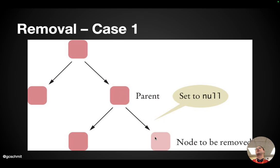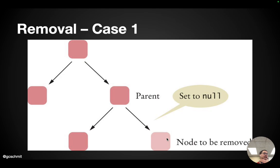This does require that as we're finding this node, we keep track of who its parent is. There's nothing in a node that refers to its parent, so we're going to need an additional variable to keep track of that as we're searching through the code.